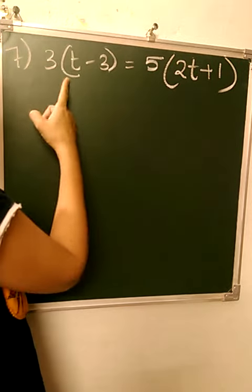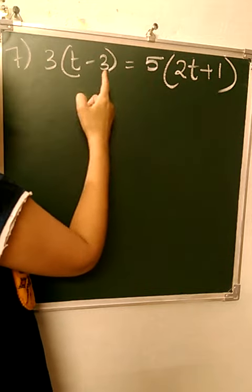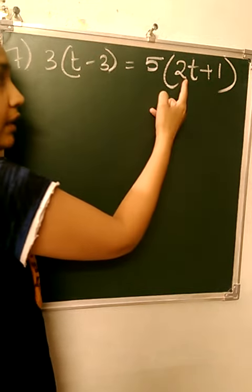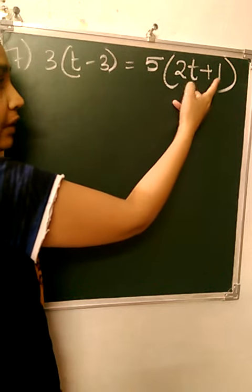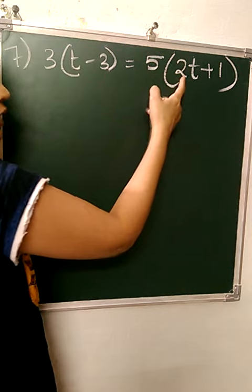First, we will remove the brackets. Removing the bracket means 3 will be multiplied to t, 3 will be multiplied to 3. Similarly, 5 will be multiplied to 2t and 5 will be multiplied to 1. And if they have any sign, that sign will also be multiplied.